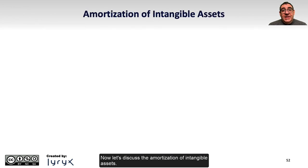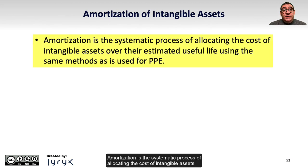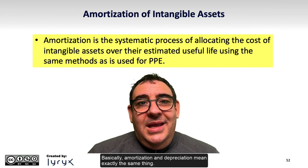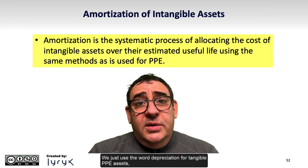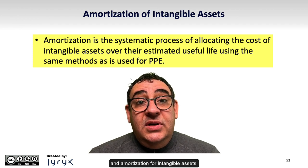Now let's discuss the amortization of intangible assets. Amortization is the systematic process of allocating the cost of intangible assets over their estimated useful life, using the same method as is used for PPE. Basically, amortization and depreciation mean exactly the same thing — we just use the word depreciation for tangible PPE assets and amortization for intangible assets.